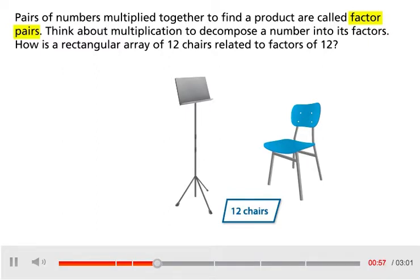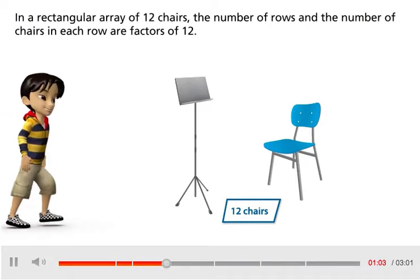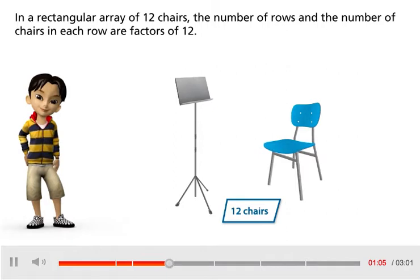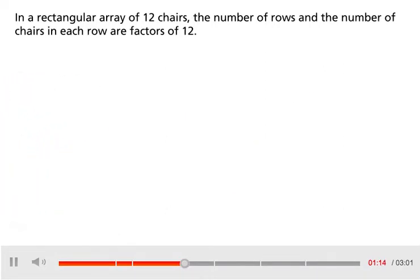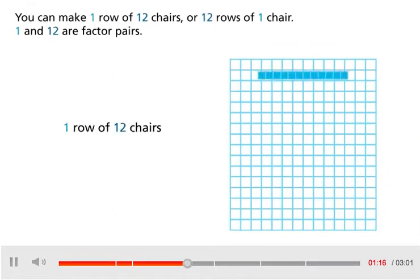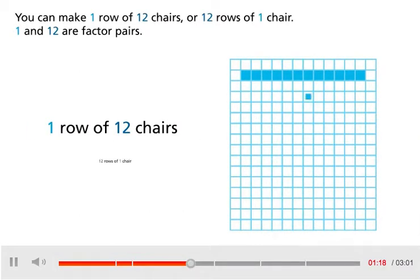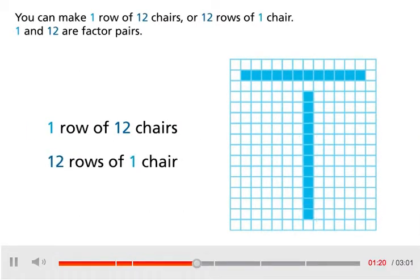How is a rectangular array of 12 chairs related to factors of 12? In a rectangular array of 12 chairs, the number of rows and the number of chairs in each row are factors of 12. You can make 1 row of 12 chairs or 12 rows of 1 chair. 1 and 12 are factor pairs.